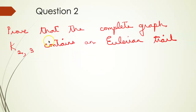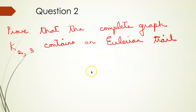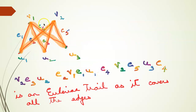Question 2: prove that the complete graph K23 contains an Eulerian trail. I have already explained what a complete graph is in one of my earlier sessions. This is your K23, and now we need to find an Eulerian trail.